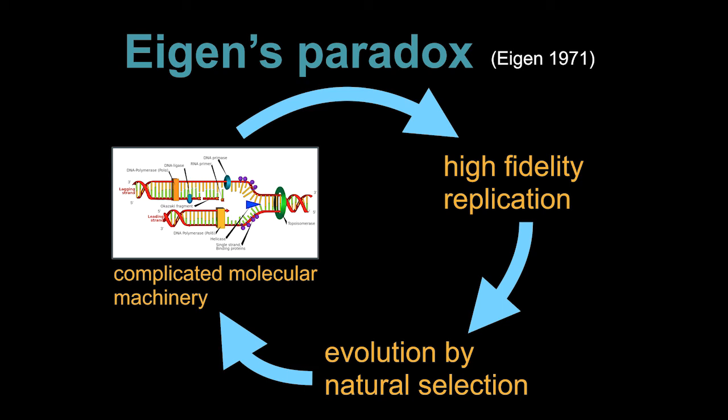Eigen estimated that a sequence of around 100 nucleotides would be needed in order to code for enzymes that would be capable of replicating nucleic acids. So Eigen's paradox is that you seem to have to start already in quite a complicated place in order to have high fidelity replication, in order to have evolution. And so in order to get around this paradox, we have to think of simpler ways in which heredity could be implemented that are not as complex as the way it's done inside the cell.